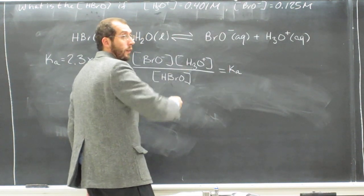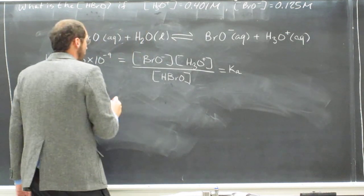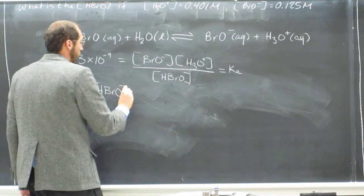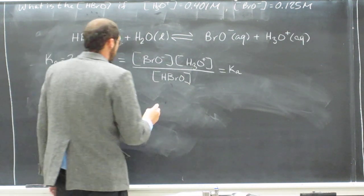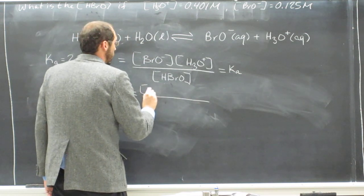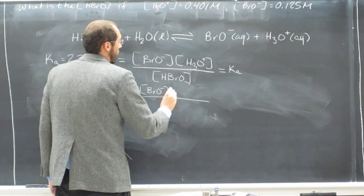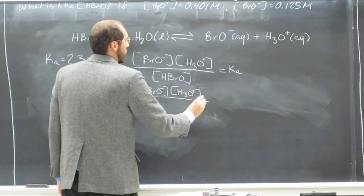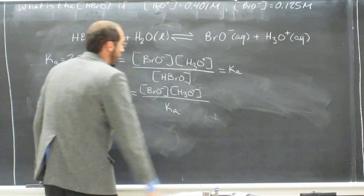So our new expression will be concentration of HBrO equals BrO minus concentration times H3O plus concentration divided by Ka.